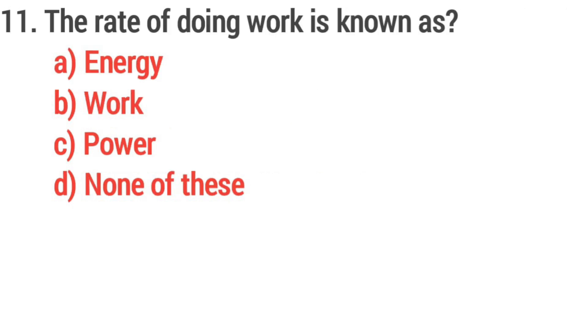Question 11. The rate of doing work is known as? Answer: Option C, Power.